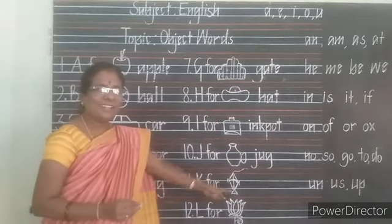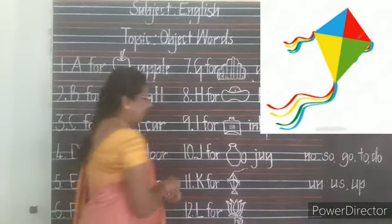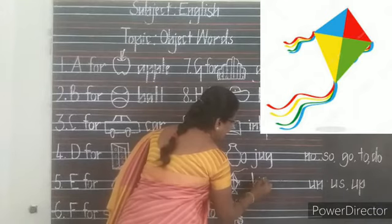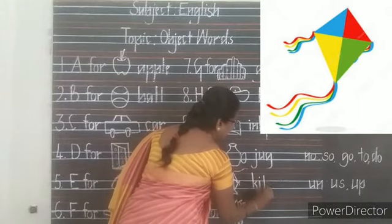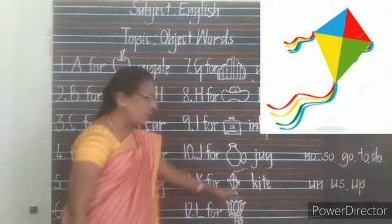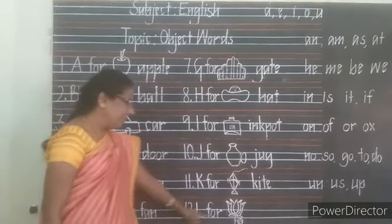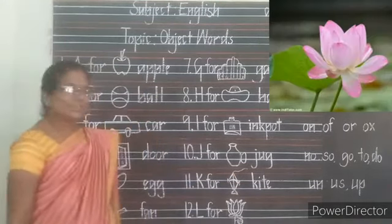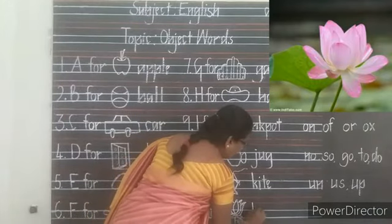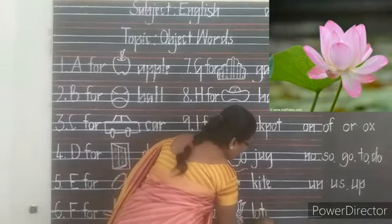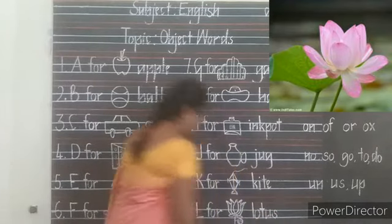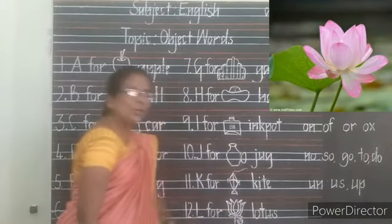K — Kite. K-I-T-E, Kite. K-I-T-E, Kite. L — Lotus. L-O-T-U-S, Lotus. L-O-T-U-S, Lotus.